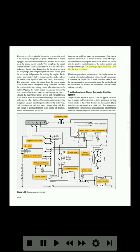The de-energizing of these relay coils halts the start operation. After these procedures are completed, the engine should be operating efficiently and ignition should be self-sustaining. If, however, the engine fails to reach sufficient speed to halt the starter operation, the stop switch may be used to break the circuit from the positive bus to the main contacts of the undercurrent relay.